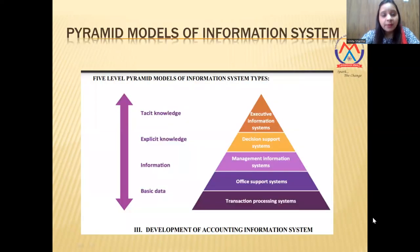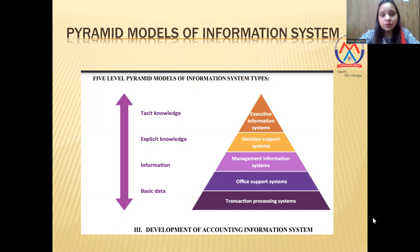This is the pyramid model of information system — the five-level pyramid model. First is transaction processing, then office support, management information system, decision support system, and executive information system. The parameters in the pyramid are: basic data, information, explicit knowledge, and tracking knowledge.